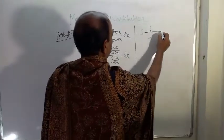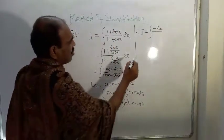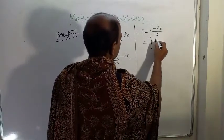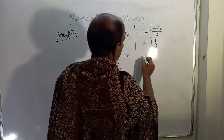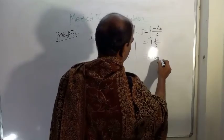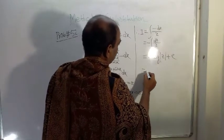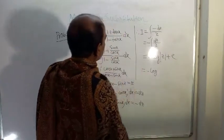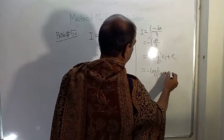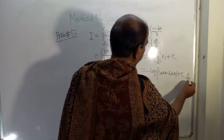Therefore I equals the integral of -dz over z, which equals -log|z| + c. Substituting back, z is cos x - sin x, so the answer is -log|cos x - sin x| + c. This is the answer to the given problem.